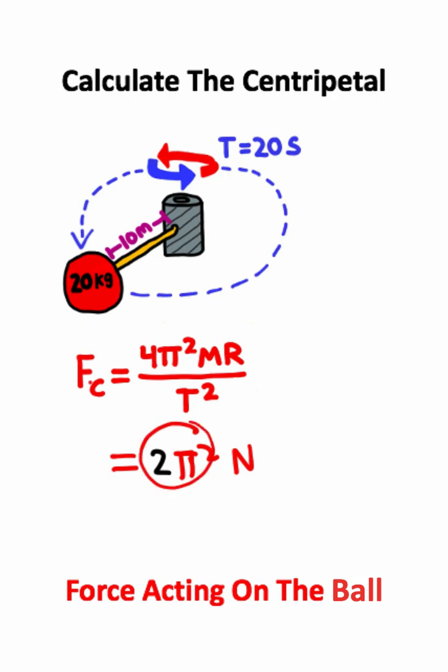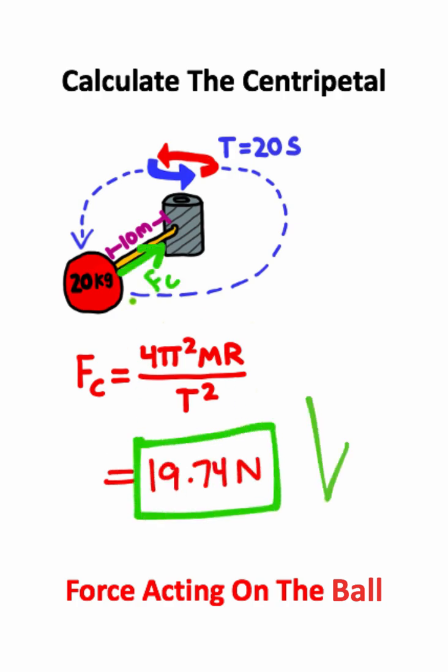And if I want to change 2π² to a decimal, this is approximately 19.74 newtons of force. So this is the magnitude of centripetal force keeping the 20 kilogram ball in this circular motion.